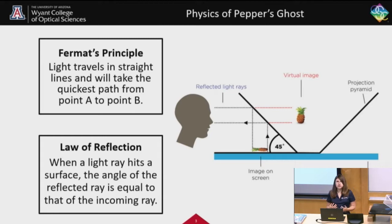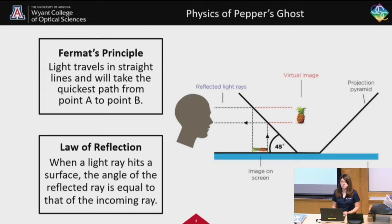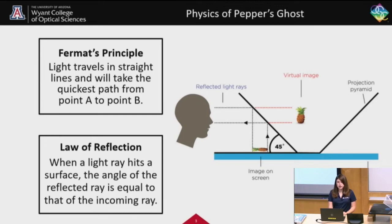What is the physics of Pepper's Ghost? How does this really work? To understand it, we need to understand two main principles. The first is Fermat's principle, which says that light travels in straight lines and will take the quickest path from point A to point B. And then the law of reflection states that when a light ray hits a surface, the angle of that ray is going to be equal to that when it gets reflected. This image to the right shows a diagram of these principles at work, and this actually corresponds to the demo that I'm going to show later.